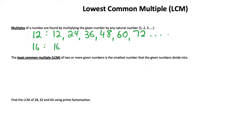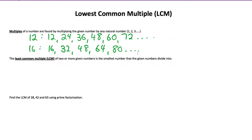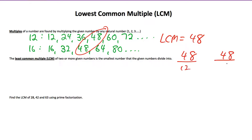Similarly, the multiples of 16 are 16 times 1, 16 times 2, 16 times 3, 16 times 4, and so on. If we're asked to find the least common multiple, we look at our lists and find the first number common to both. In this case it's 48. So our least common multiple is 48, meaning 48 is the smallest number that both 12 and 16 divide into. 12 goes into 48 four times, and 16 goes into 48 three times.